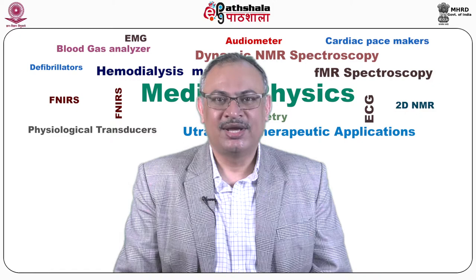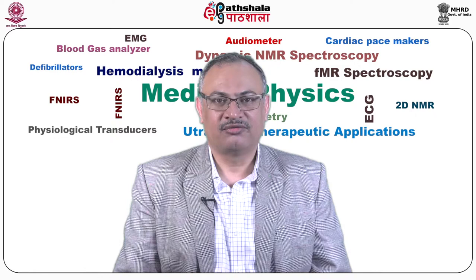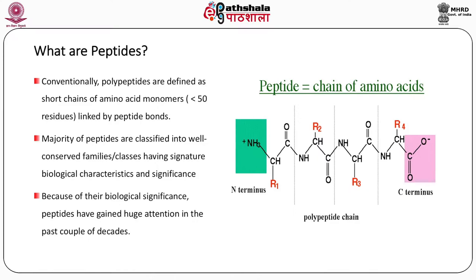At the outset, I should tell you that this module has been prepared by Dr. Anirban Bhunia of Bose Institute, Calcutta. What are peptides? Conventionally, polypeptides are defined as short chains of amino acid monomers linked by peptide bonds. The chain has an N terminus, peptide bonds (CONH) in between, and ends at the C terminus. Majority of peptides are classified into well-conserved families with signature biological characteristics, and have gained huge attention in the past couple of decades.